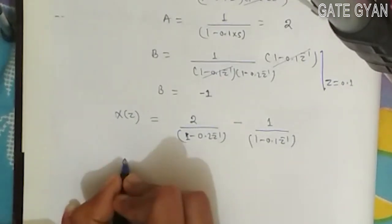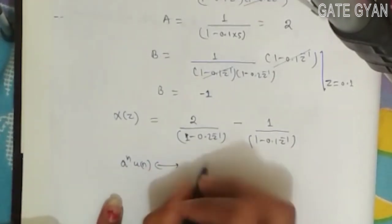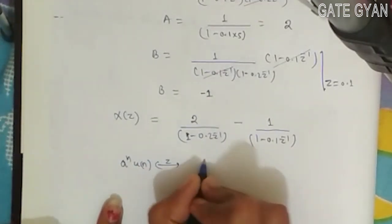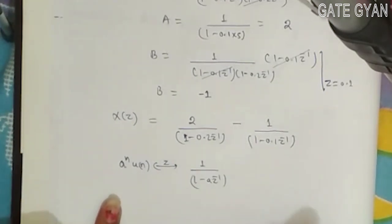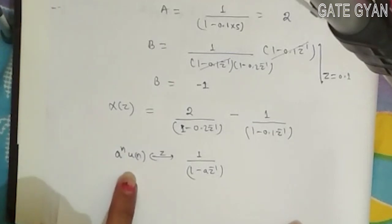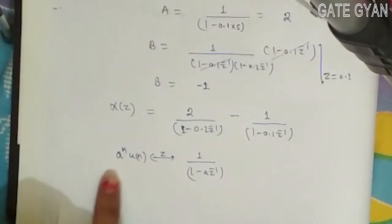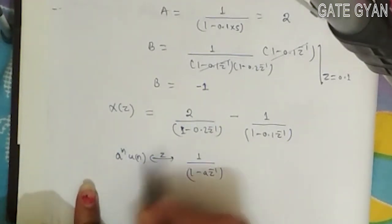Now in inverse Z-transform, a^n u(n) Z-transform is given by 1/(1 - az^-1). So by comparing this with the given expression, I will get my x(n) in terms of a^n u(n).